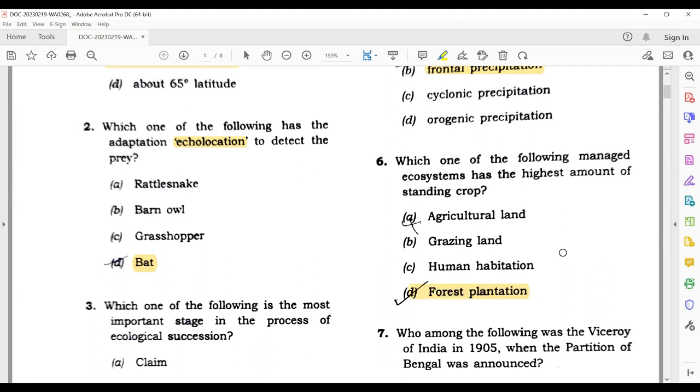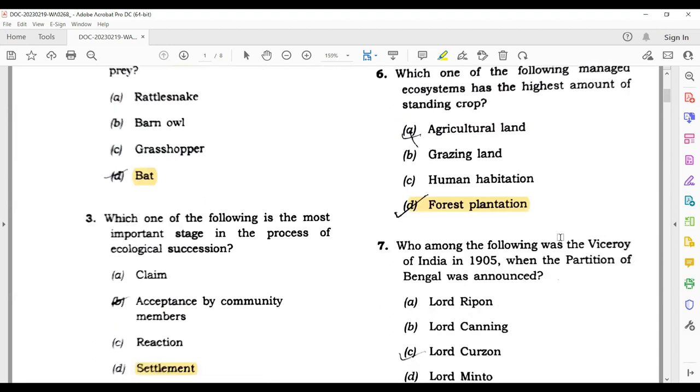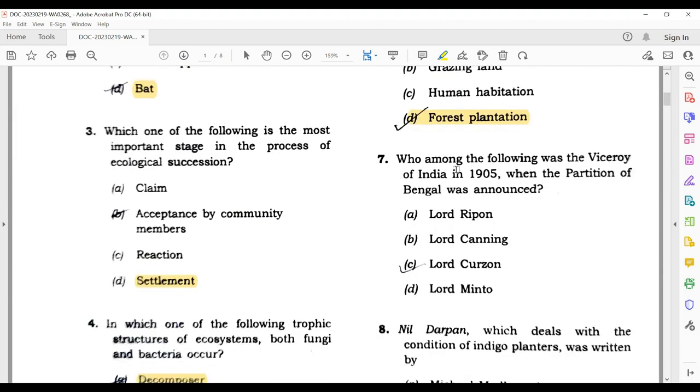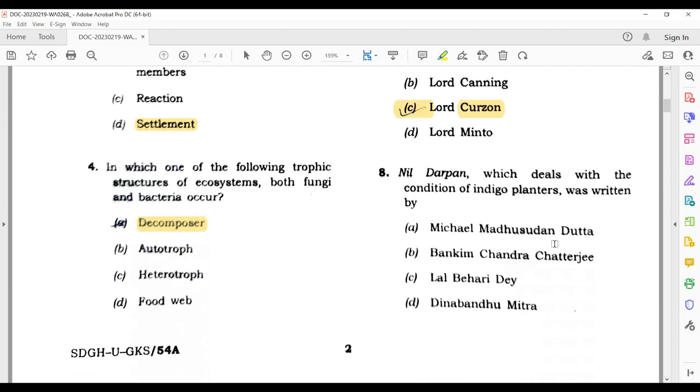This is its answer. Now the eighth question: Nil Darpan - this is again a factual question, so its correct answer is Dinabandhu Mitra. Now let's move to question number nine: who among the following revolutionaries founded the Hindustan Socialist Republican Army? The answer is Chandra Shekhar Azad. Chandra Shekhar Azad established this.